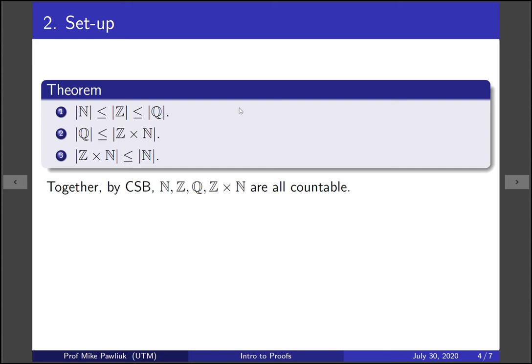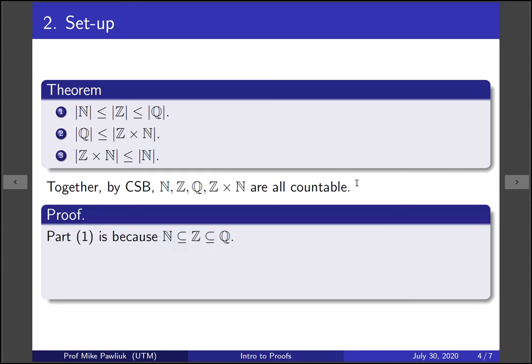So now let's prove the first two relatively quickly. The first one is just because these are all ordered by subsets. The second one is more interesting.